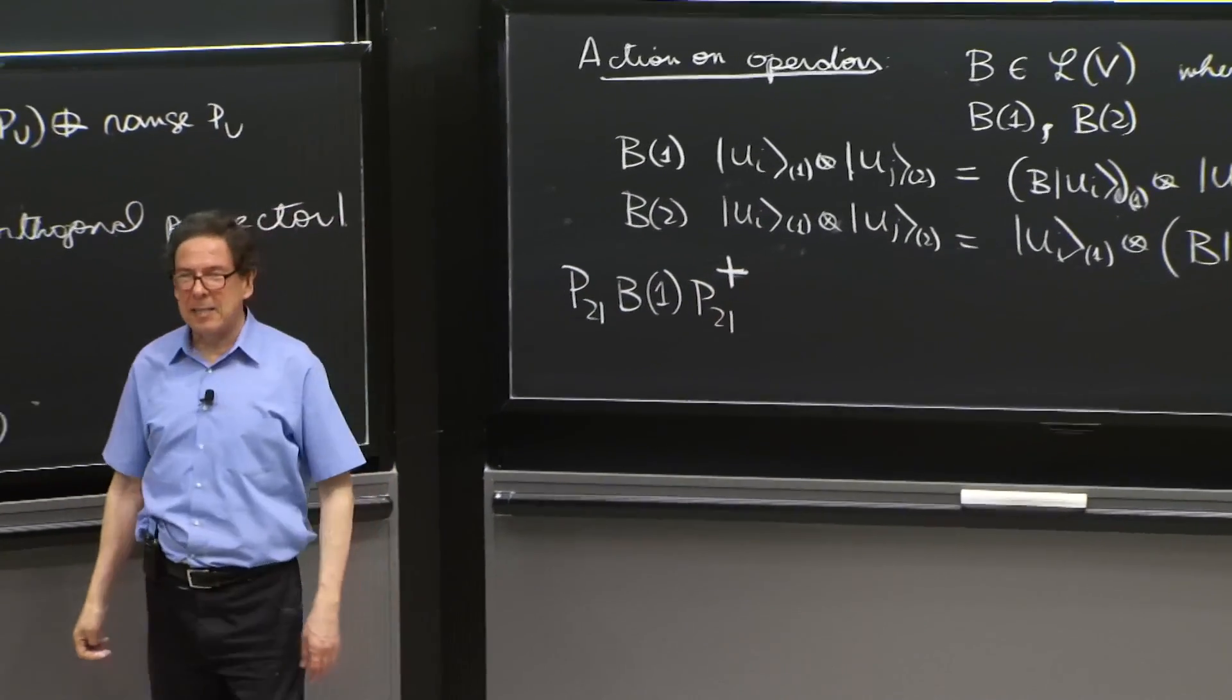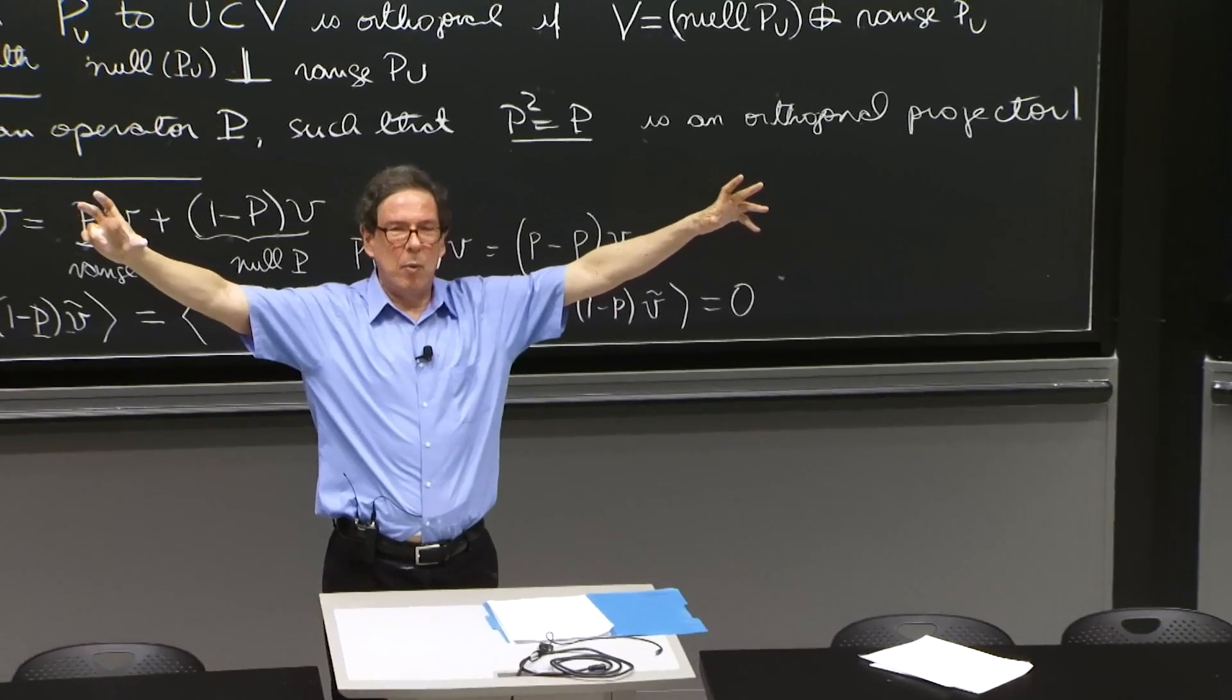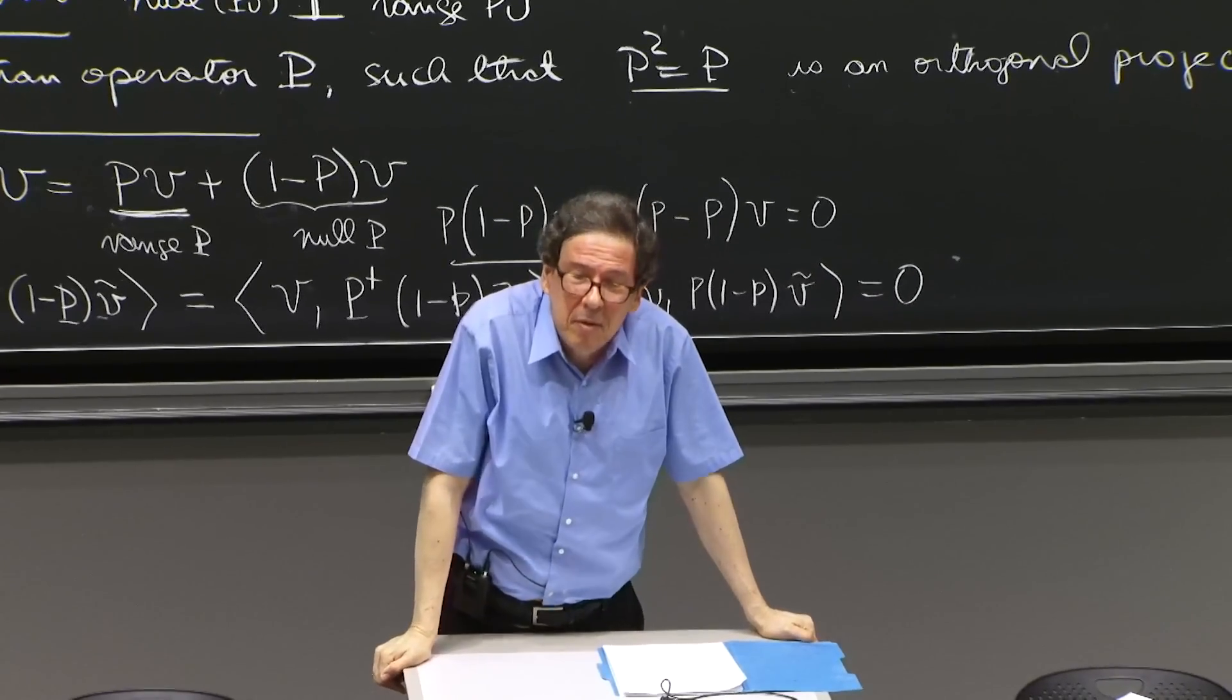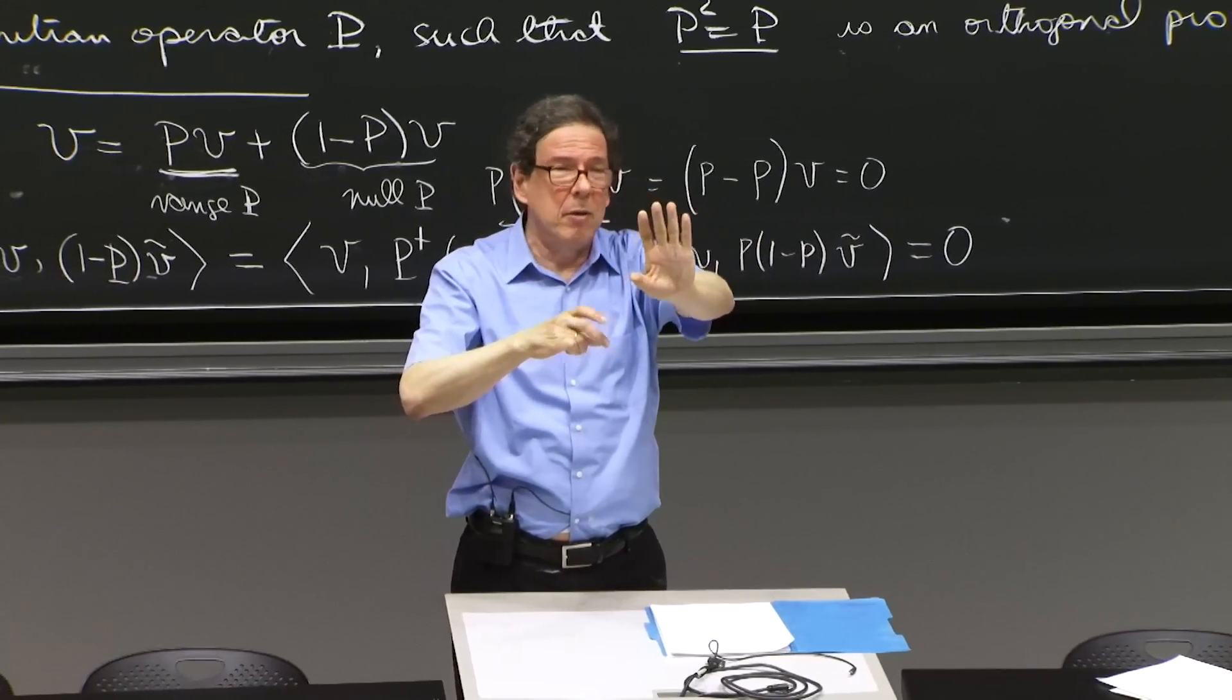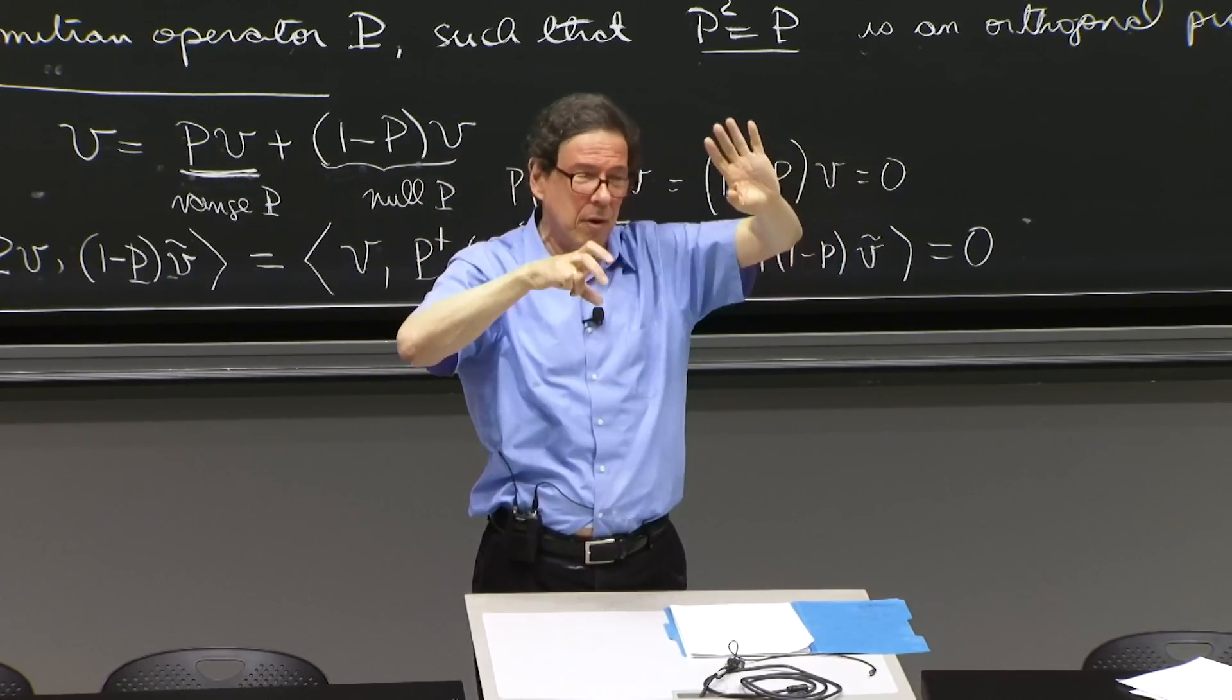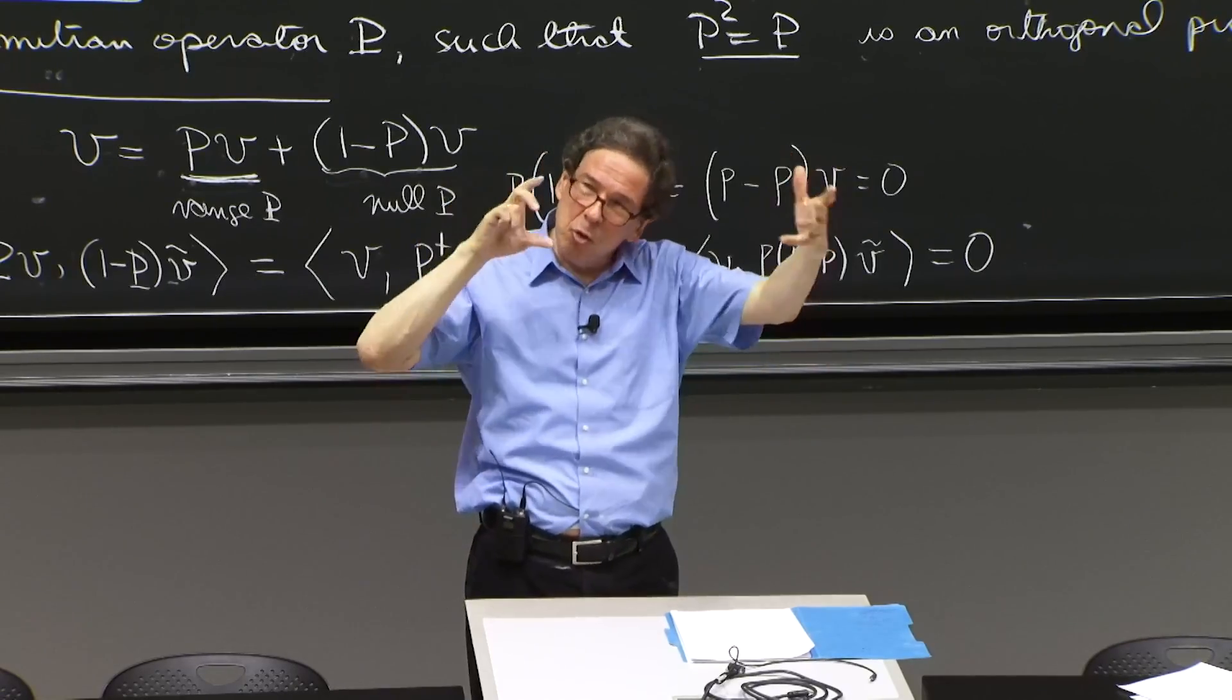Remember, when you ask how an operator acts on an operator, you always have the operator that you're acting with come from the left and from the right. That is the natural way in which an operator acts on an operator. You can think of this thing as your operator being acted upon as having surrounded by a ket and a bra. And then when the states transform, one transforms with U, one transforms with U dagger. So always the action on an operator is with U and U dagger.